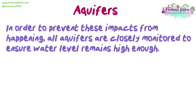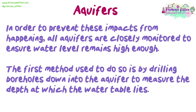In order to prevent these impacts from happening, all aquifers are closely monitored to ensure water level remains high enough. The first method to do so is by drilling boreholes into the aquifer to measure the depth at which the water table lies.